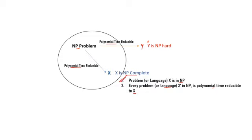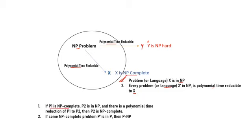Now suppose there is another problem Y, and this time we do not know if Y belongs to NP — it belongs to some unknown class. If any NP problem is polynomial-time reducible to Y, we can say Y is an NP-hard problem. The difference between NP-complete and NP-hard lies here: in both cases, any NP problem is polynomial-time reducible to the problem, but when it is NP-complete we know that problem is in NP, whereas if we do not know where the problem belongs, we tag it as NP-hard. Additionally, if P1 is NP-complete, P2 is in NP, and there is a polynomial-time reduction from P1 to P2, then P2 is also NP-complete. And if some NP-complete problem is in P, then P equals NP.